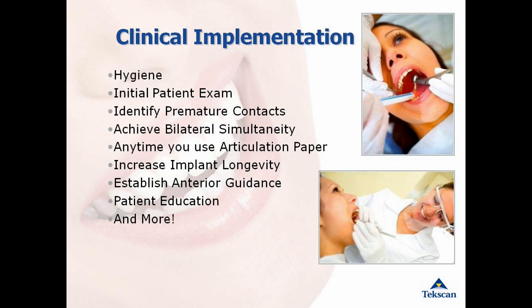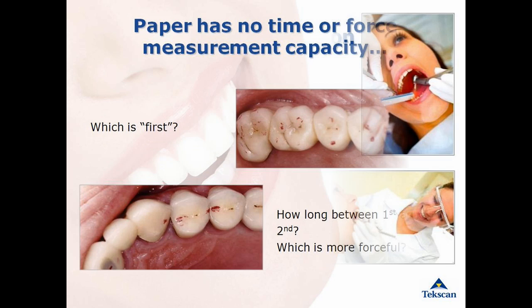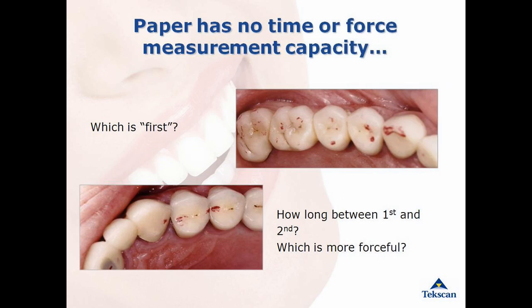T-Scan provides a useful clinical application in identifying and alleviating premature occlusal contacts. You now have the ability to identify which tooth hit first. The typical means of looking at occlusion — such as articulating paper, paste, wax, and foil — do not provide you with any information on timing and force of occlusal contacts. The T-Scan provides you with a dynamic movie of your patient's occlusion.